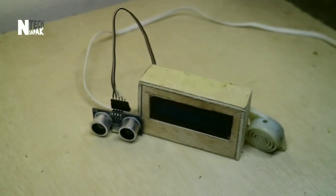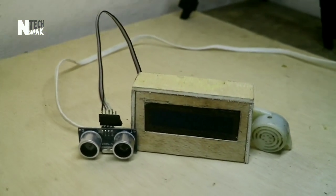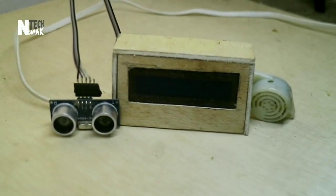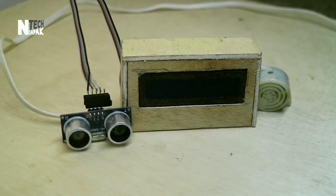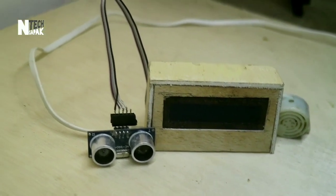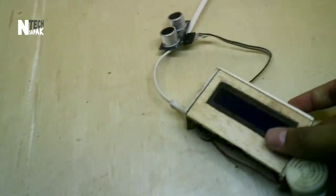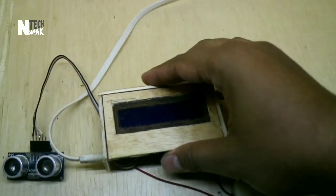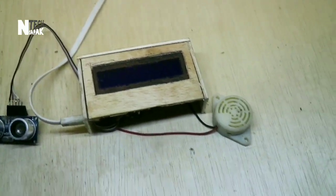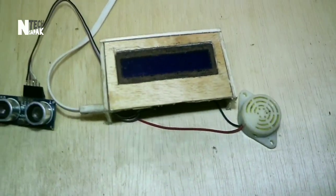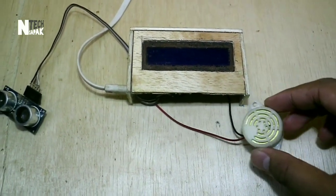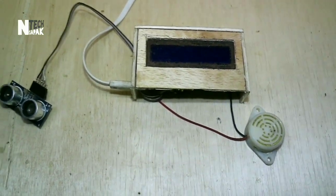Okay teman-teman balik lagi di channel ini. Kali ini kita akan bikin sebuah alat sensor parkir dimana sensor parkir ini biasanya terdapat di sebuah mobil mobil mewah mungkin tapi sekarang itu sudah banyak yang jual di online shop. Jadi kita bisa buat sendiri seperti ini dimana sensornya kita pakai ultrasonic dan sebuah buzzer LCD disini itu untuk hanya untuk menampilkan indikator jaraknya aja.